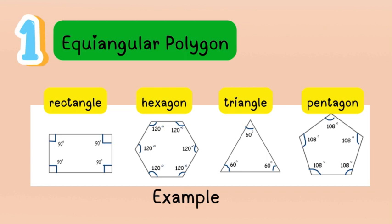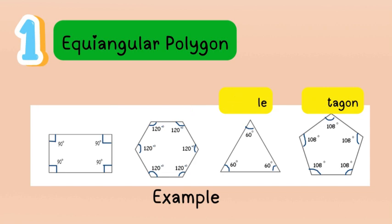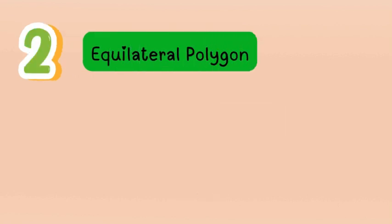A triangle totals 180°, a rectangle totals 360°. For a pentagon with 5 sides: (5 − 2) × 180° = 3 × 180° = 540°. To find each equal angle of a regular pentagon, divide 540° by 5, which gives you 108 degrees. Now the next type of polygon is the equilateral polygon.